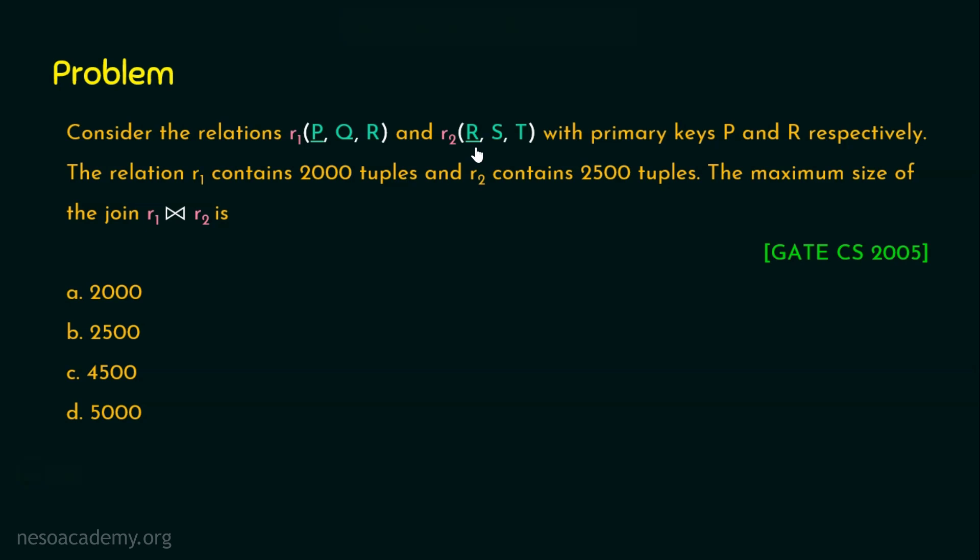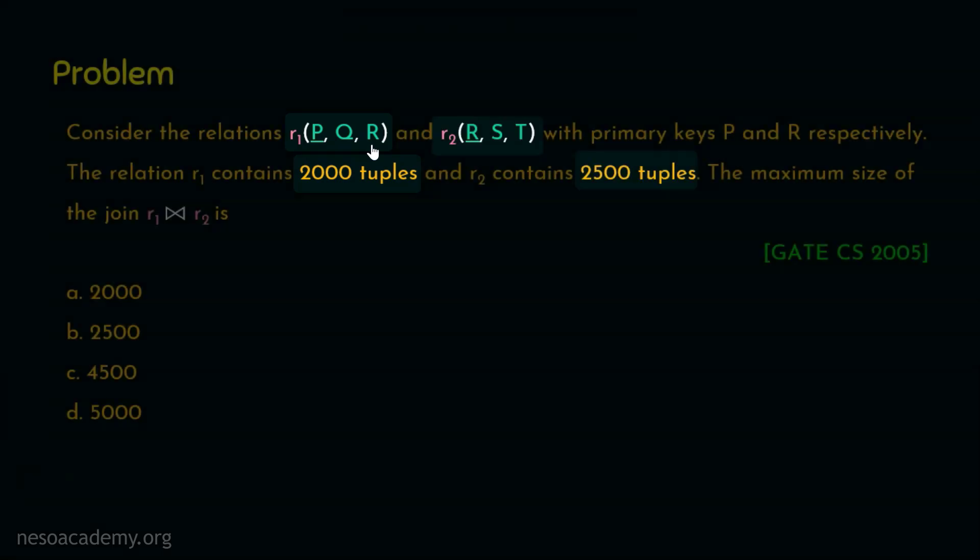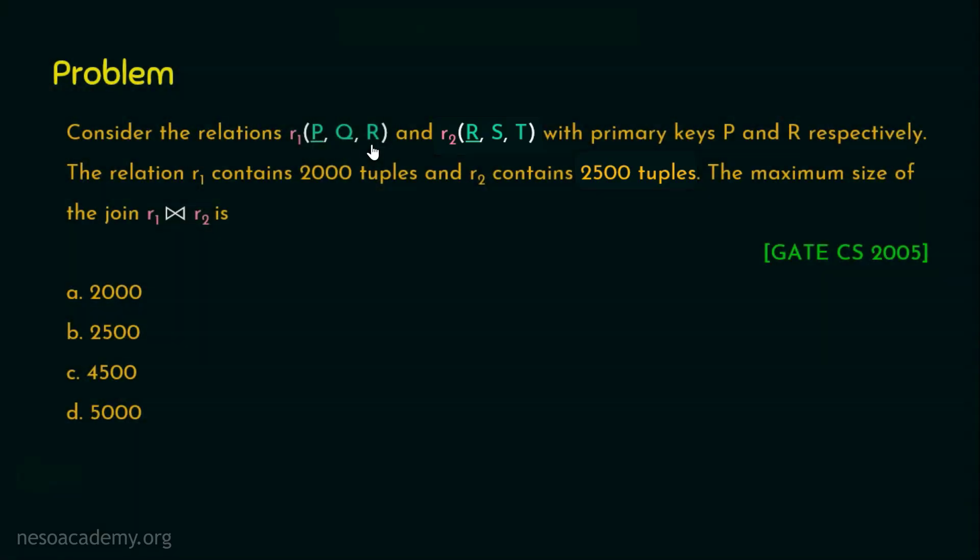However, one important thing that we should note here is the attribute R in R1 is not a primary key attribute, whereas in the relation R2, the attribute R is a primary key. And one more thing is that R1 contains 2000 tuples and R2 contains 2500 tuples. Then what's the maximum tuples we will get when we perform R1 natural join R2? Let's see that now.